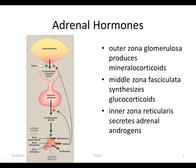Secretion of adrenal hormones — glucocorticoids — is controlled by pituitary adrenocorticotropic hormone, ACTH, which is released in response to the hypothalamic corticotropin-releasing hormone. Glucocorticoids serve as feedback inhibitors of corticotropin and corticotropin-releasing hormone secretion.